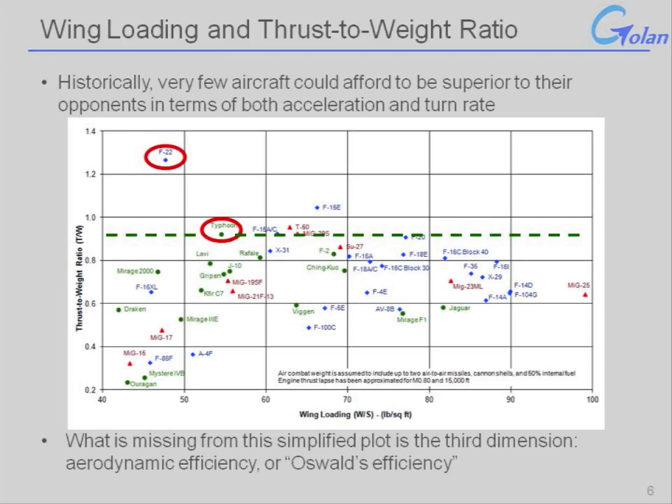On the other side of the Atlantic, you have the F-22. The United States, with a slightly larger budget, was able to far exceed the thrust-to-weight ratio that the Typhoon was able to achieve. The reasons for that should be obvious — the United States has the resources to do these kinds of things, which the Europeans at the time lacked.